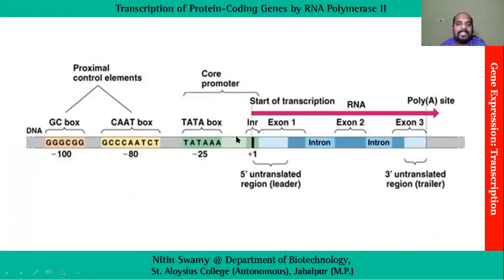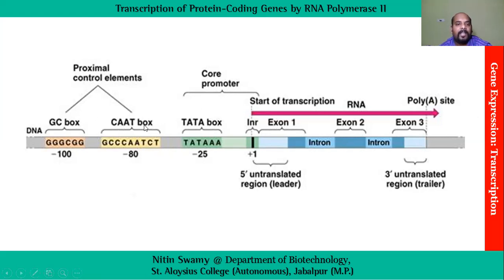In this diagram we can easily see the structure of a eukaryotic gene where we have the TATA box as our core promoter, and the CAT box and GC box as our proximal control elements.